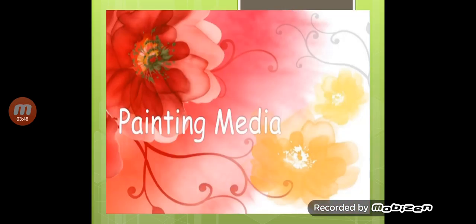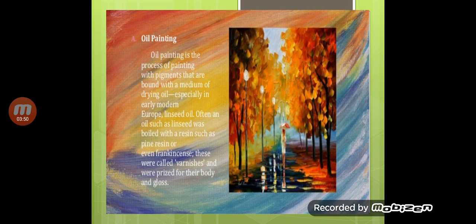The first painting medium is oil painting, which is a process of painting with pigments bound with a medium of drying oil — especially in early modern Europe, linseed oil. Oil painting is done by mixing oil with pigments. Often an oil such as linseed was boiled with a resin such as pine resin or frankincense; these were called varnishes and were prized for their body and gloss.